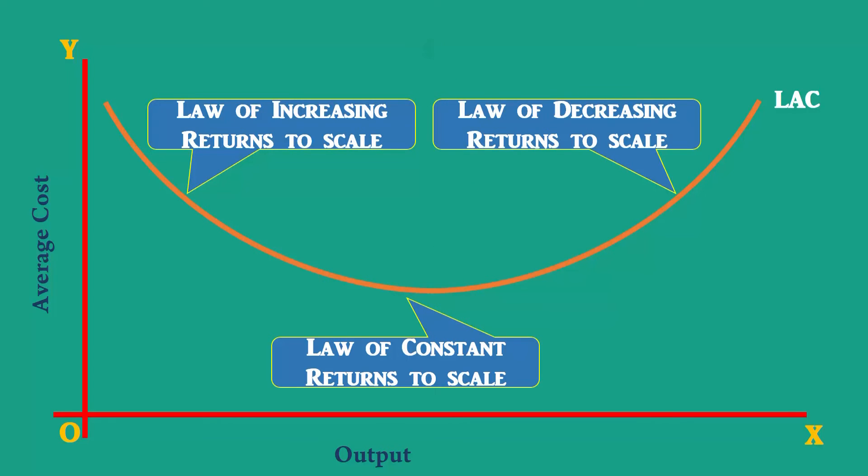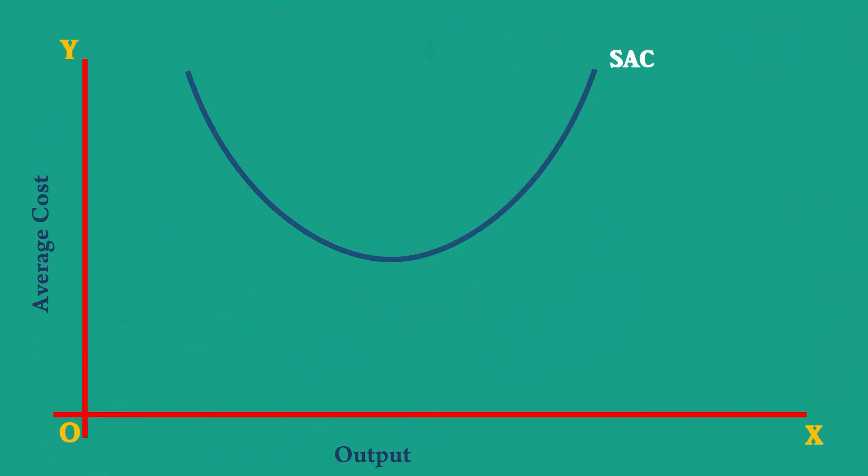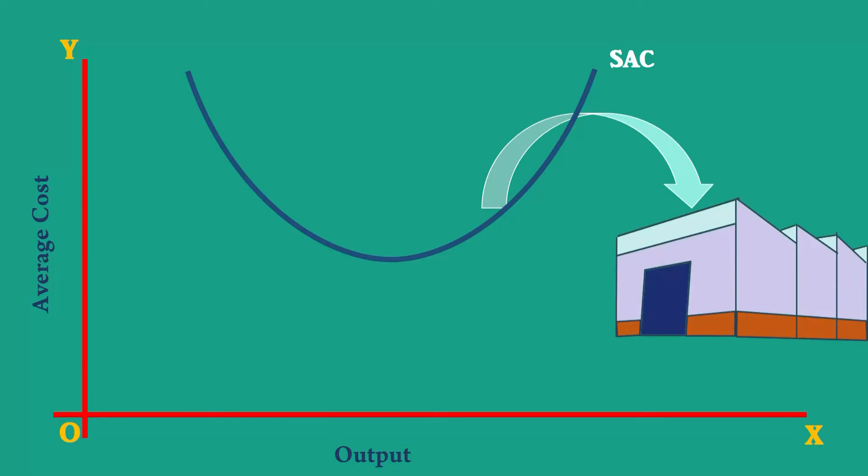Fourth, the short run average cost curve is a plant curve. In the short run, a firm is tied to a given plant size. It has to use that plant. It has to move along the short run average cost curve. It means only by varying the variable cost, the firm produces different levels of output.